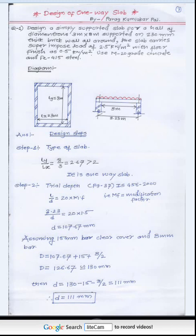With respect to the dimensions provided, I draw a diagram. Ly/Lx ratio is used and I already calculated the effective length as 3.23. The UDL shows the total load acting on the slab. We are designing the one-way slab with respect to all steps.